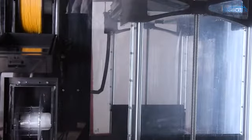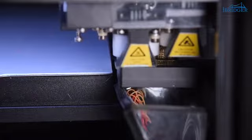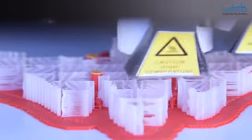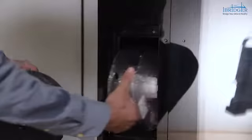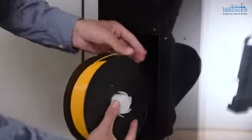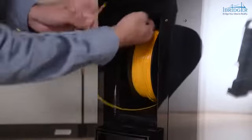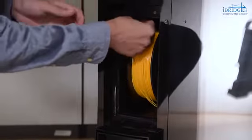Once one bin runs out, iBridger 3D printer will change to the second bin automatically. I only need to take out the empty reel and reload it on the second day. This will ensure my print continues without interruption until completion.